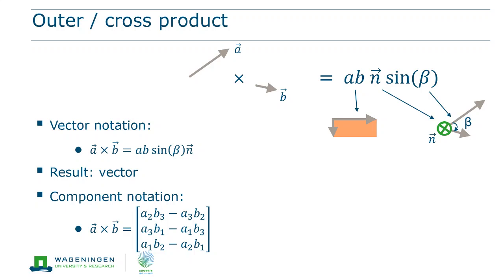So for example, the first component of the outer product vector only contains the second and the third components of vector a and b. And in fact, we see that this first component measures how different the two and three components of vectors a and b are.